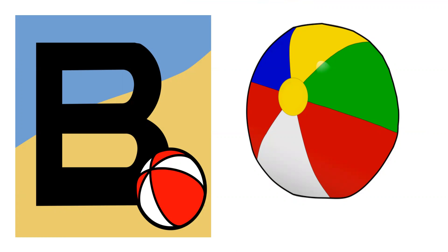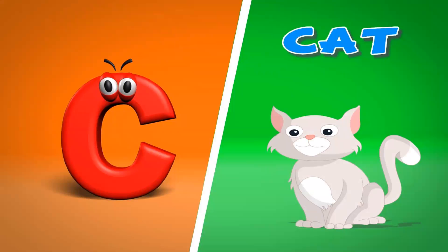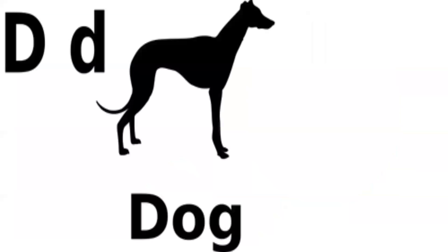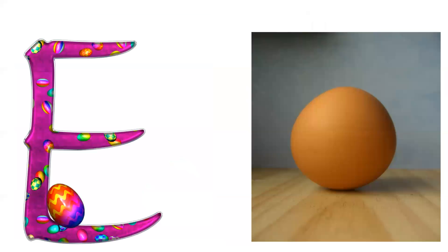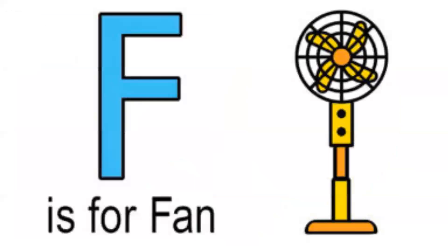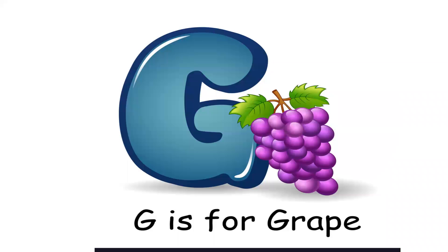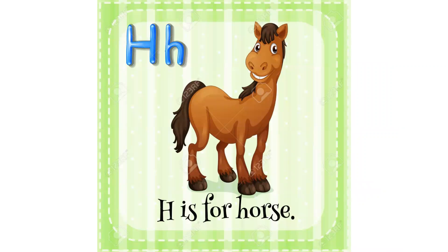C — C for cat. D — D for dog, D for duck. E — E for egg, E for egg. F — F is for fan, F for fan. G — grapes, G is for grapes.